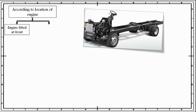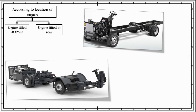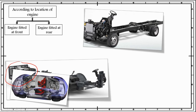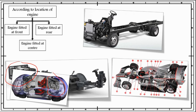Based on the location of engine, chassis can further be classified based on engine fitted at rear. As we can see in this figure, the engine for this vehicle is fitted at the rear end. Today, most buses and transport systems have their engine fitted at the back end of the vehicle. Most sports cars we see today also have their engine fitted at the rear end. The third category based on location of engine is engine fitted at center — most F1 racing cars have their engine fitted at the center, right below the driver.